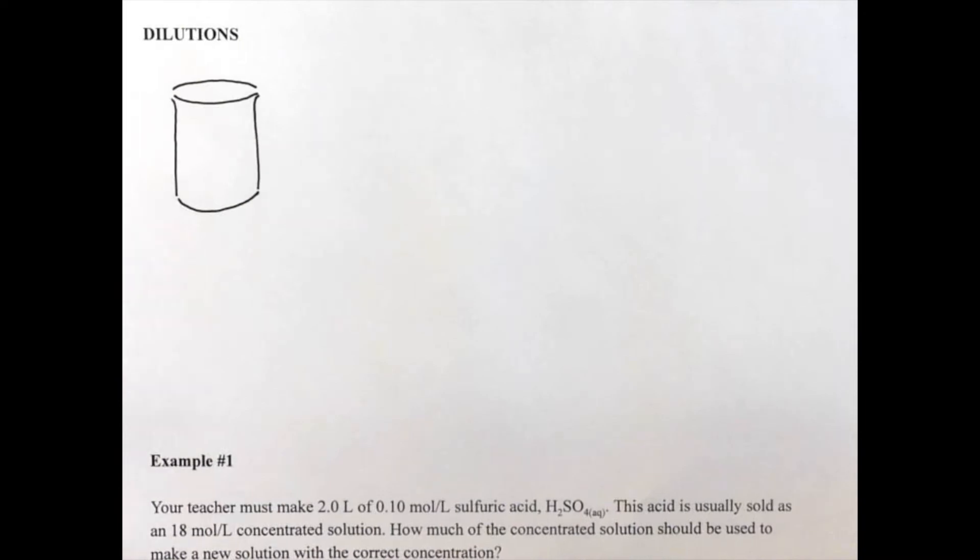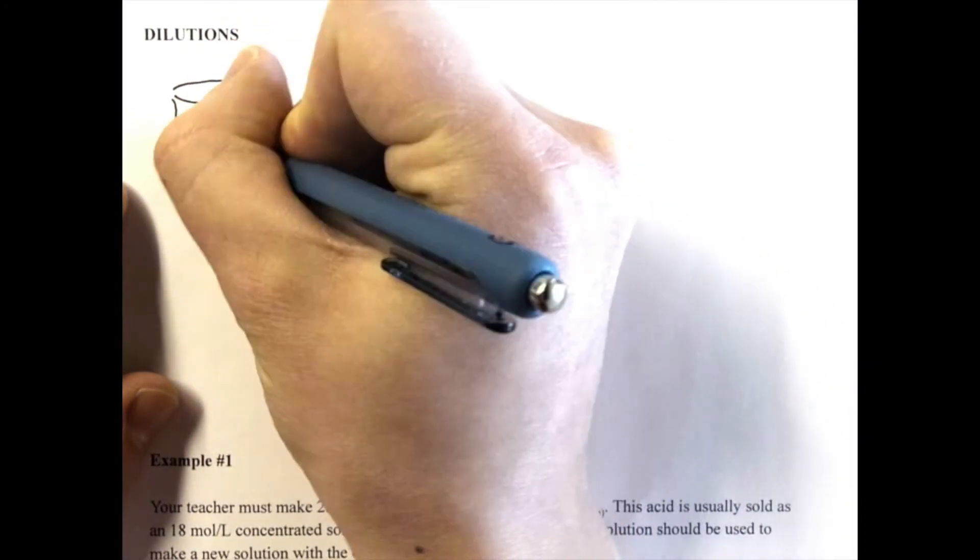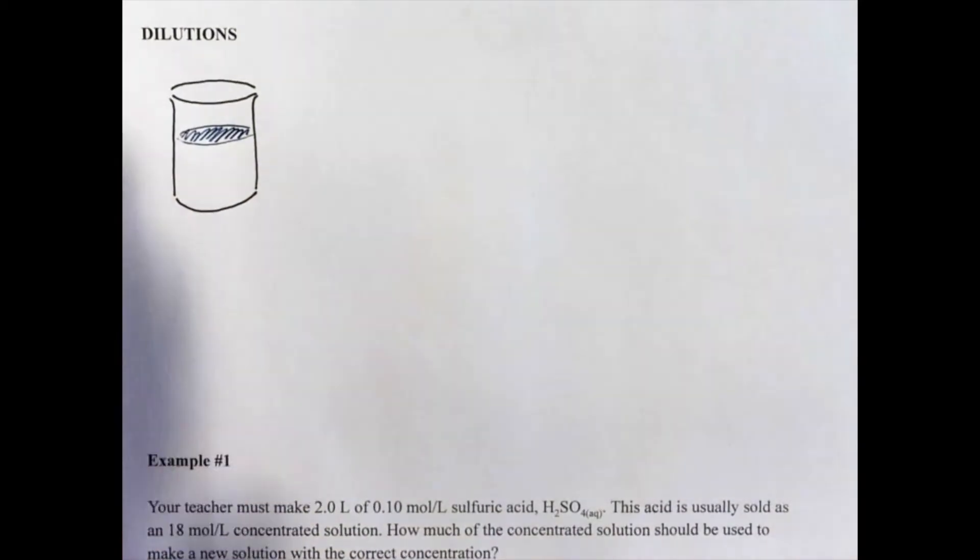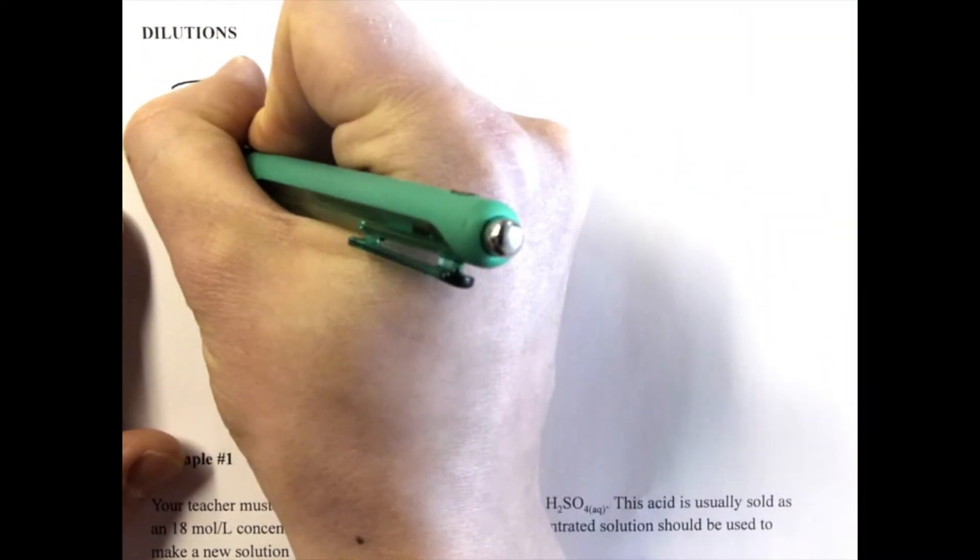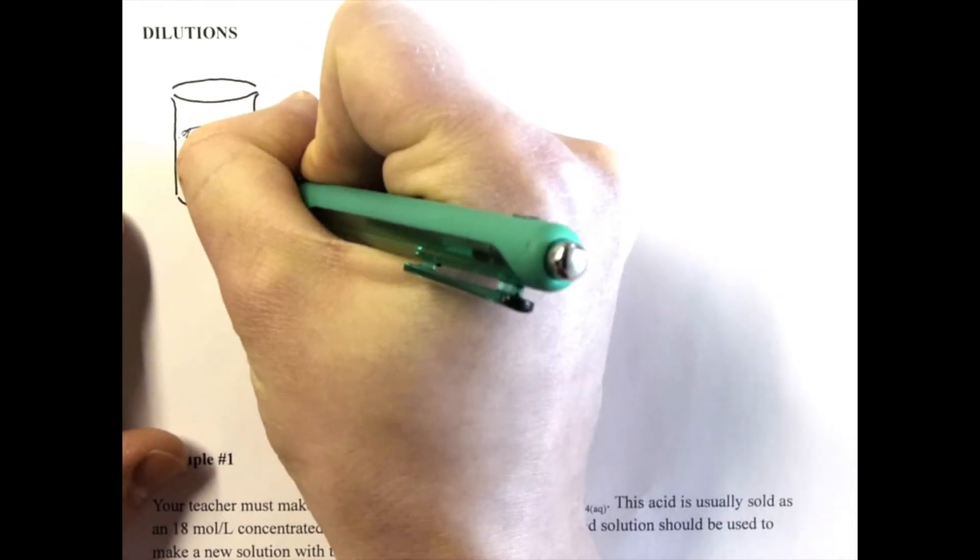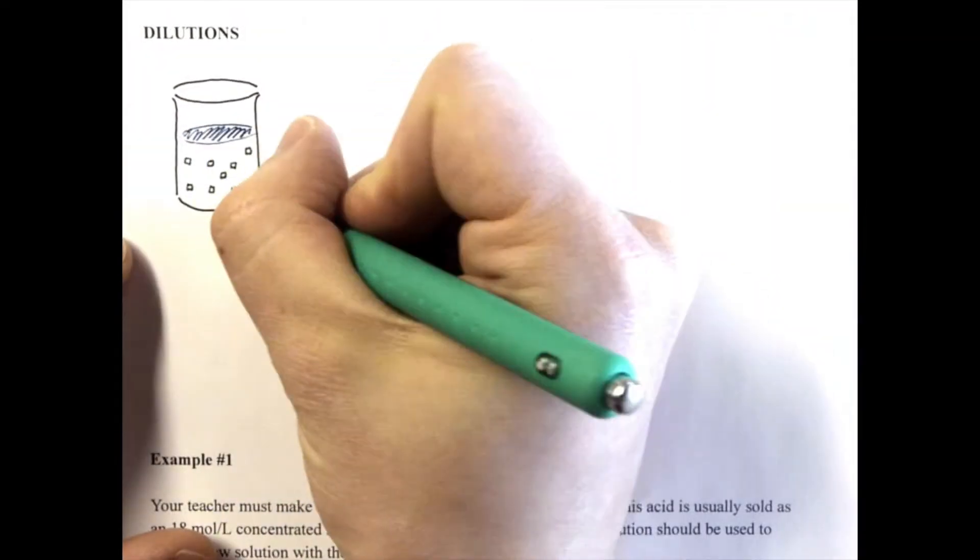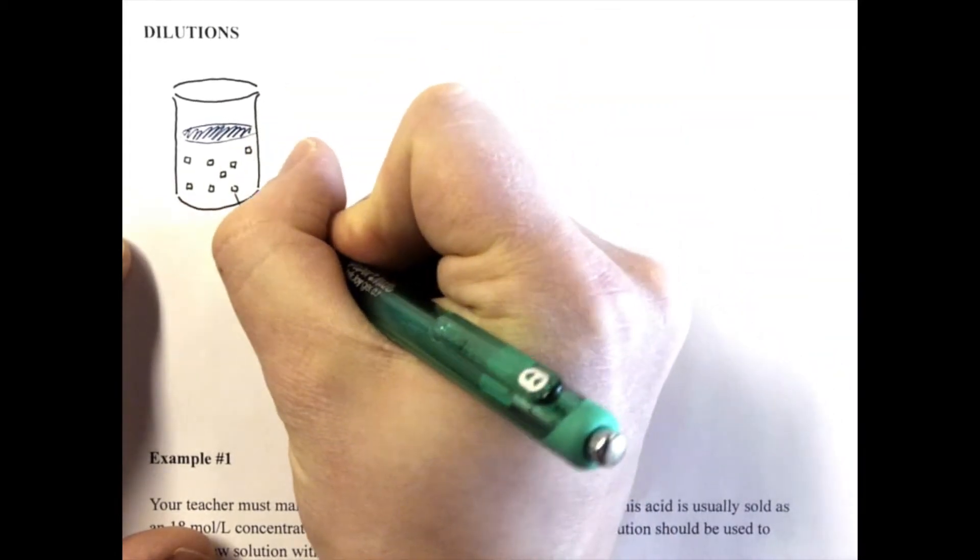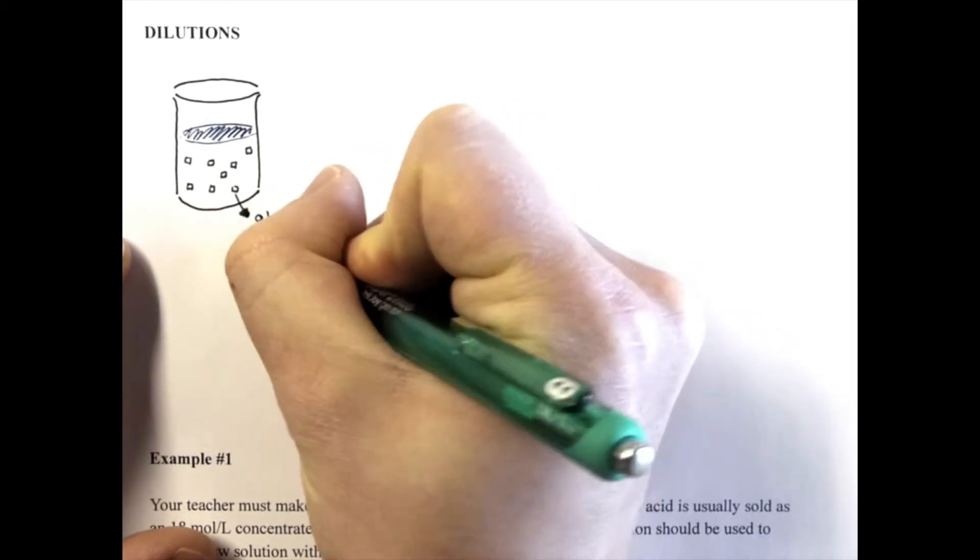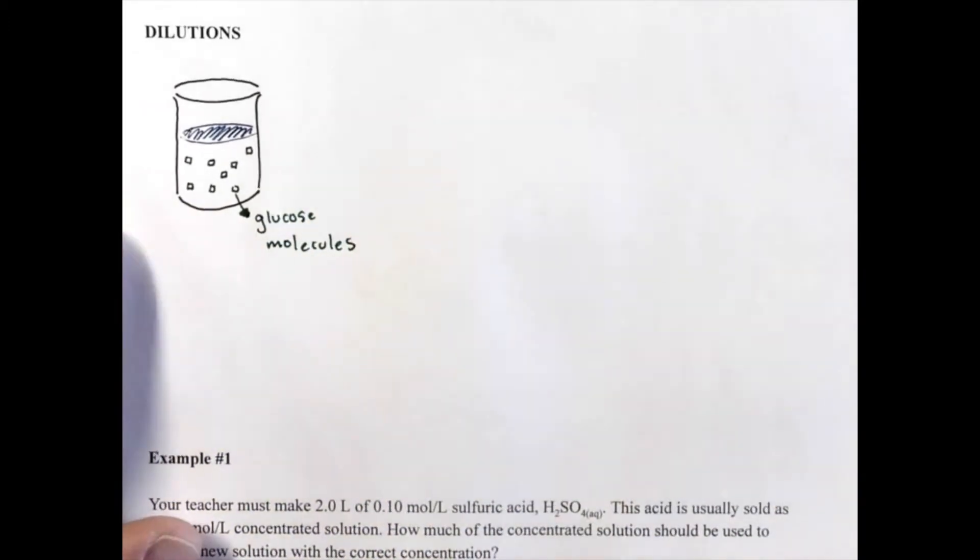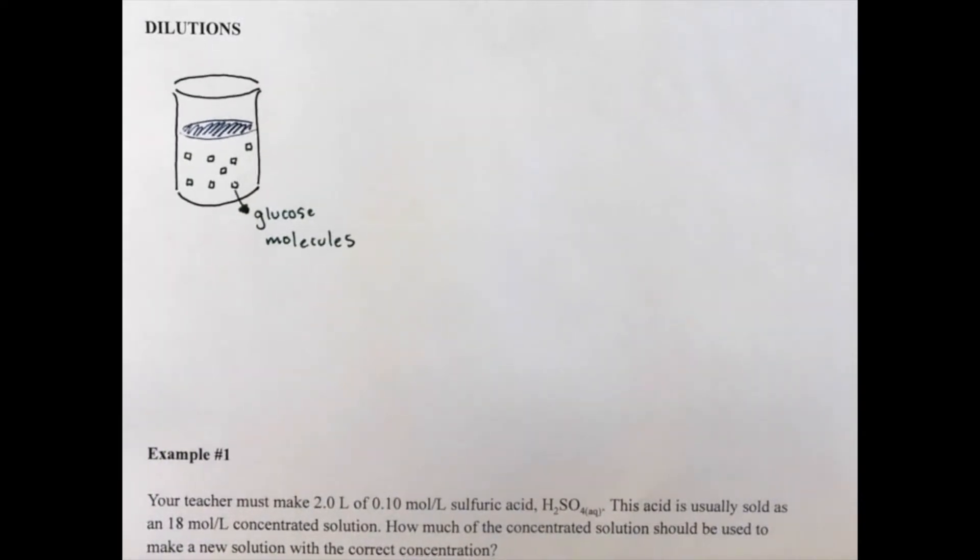So what I'm showing you here is a solution, some solution. Let's call it a glucose solution. And in this particular beaker I have some glucose. Glucose is a very simple sugar molecule. Okay, so those little green cubic square shapes in there are glucose molecules and we're in water. We have a solvent of water. So here I've got some glucose molecules inside a beaker filled with water and the glucose molecules are completely dissolved.